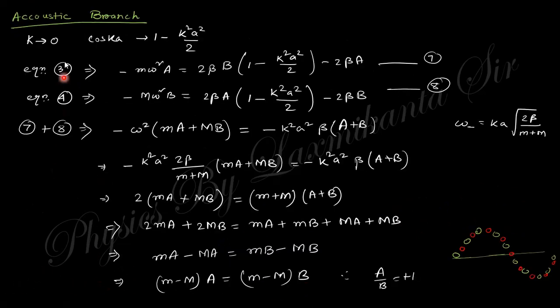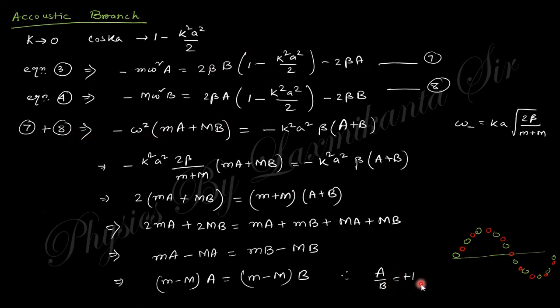For the acoustic branch, as k → 0, cos(ka) ≈ 1 − (ka)²/2. Using equations 3 and 4 and rearranging, we obtain A/B = 1, meaning the atoms move in the same direction. So in the optical branch (optical phonon), small m and capital M move in opposite directions, while in the acoustic branch they move in the same direction.